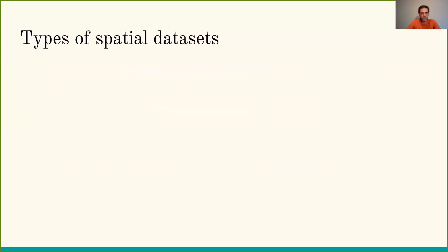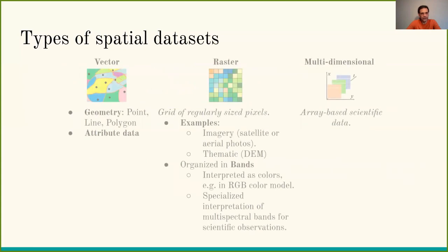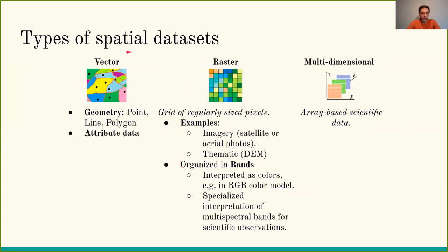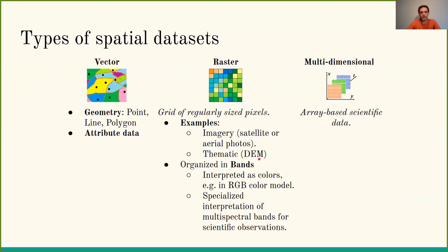The most common types of spatial data are vectors and rasters. Vectors could be seen as usual tabular data with an extra component, a geometric component. This component could contain points, lines, polygons, and their multi-counterparts — multi-points, multi-lines, etc. On the other hand, rasters are grids of regular-sized pixels, for example satellite imagery or aerial photos, or thematic rasters such as the digital elevation model.